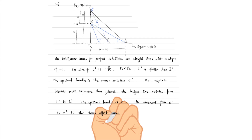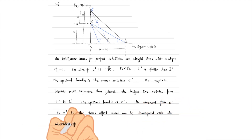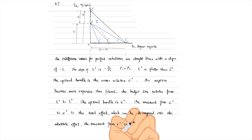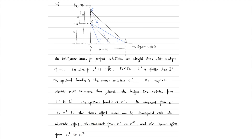The total effect can be decomposed into the substitution effect, a movement from E1 to E*, and the income effect, a movement from E* to E2. The imaginary dashed budget line L* has the same slope as the new budget line L2 and is touching the old indifference curve, I1. We use the imaginary budget line to illustrate the pure substitution effect.